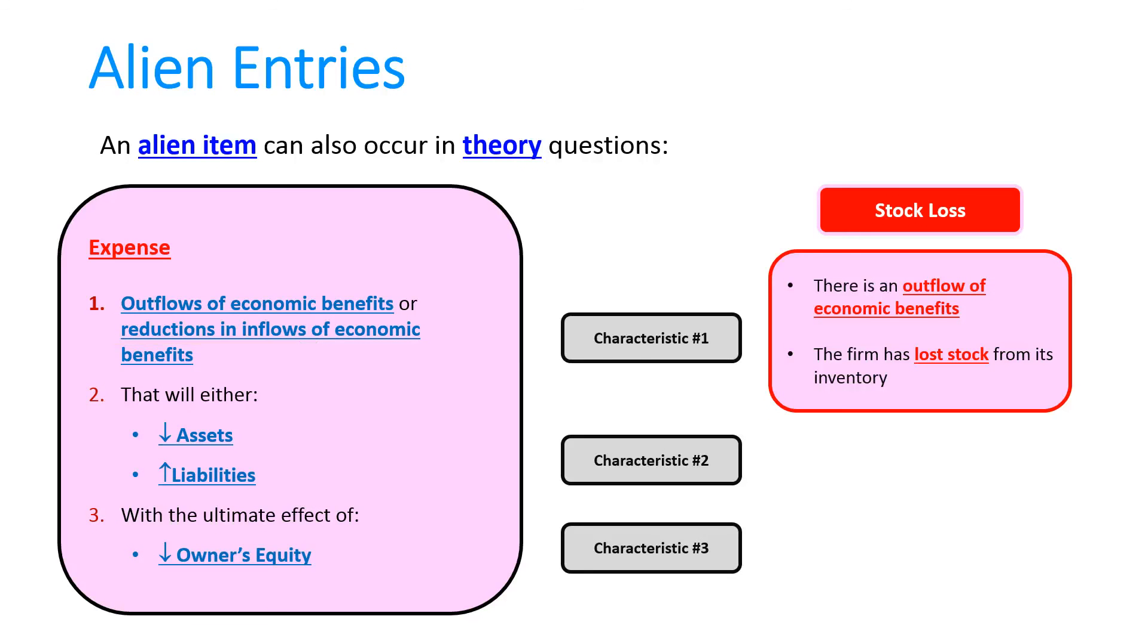Looking at the second characteristic, it's either going to decrease assets or increase liabilities. So I'm going to say it decreases assets, in particular the stock control asset. If I mentioned that it increased liabilities, that's actually part of the correct definition, but I'd lose marks because it has nothing to do with this actual stock loss. Stock losses don't make liabilities go up. So that would be an alien entry.